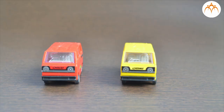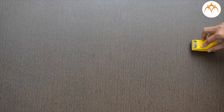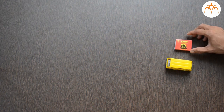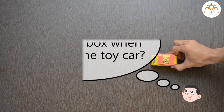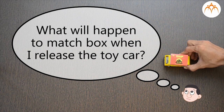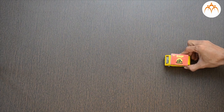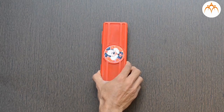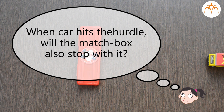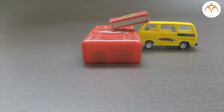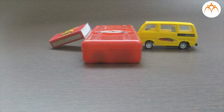This is a spring-wound car. I can hold it, take it backward, and when I release it, it moves forward. Let me put a matchbox on top of the car. When released slowly, the matchbox moves with the car and stops with the car. Now let me do this again, this time faster, with a hurdle placed in front of the car. When the car hits the hurdle, will the matchbox also stop? The matchbox did not stop with the car — it continued its motion forward.